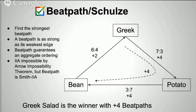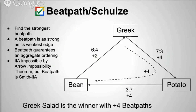Earlier we talked about independence of irrelevant alternatives. BeatPath is not actually guaranteed to satisfy that, but it has a slightly weaker property called Smith IIA. The Smith set is basically the set of tied Condorcet winners. BeatPath guarantees that if you throw in any irrelevant alternatives that aren't in the Smith set, they won't affect anyone who is in it. That makes it stronger than Borda, where irrelevant alternatives can actually kick the first-place winner out.